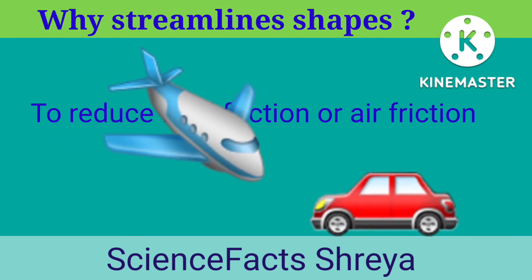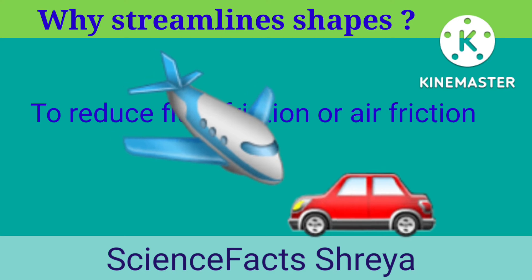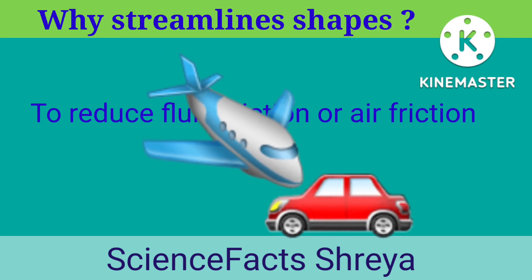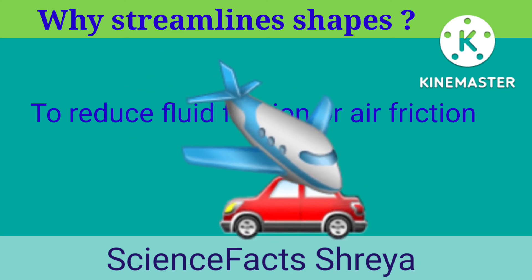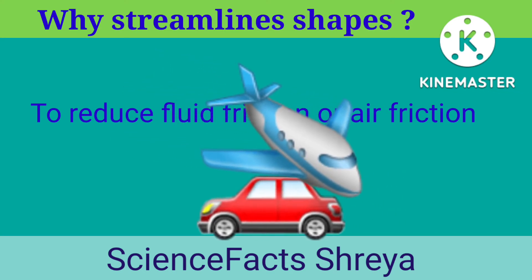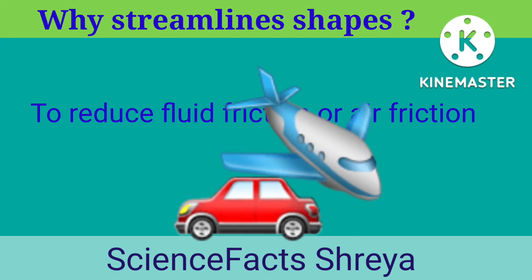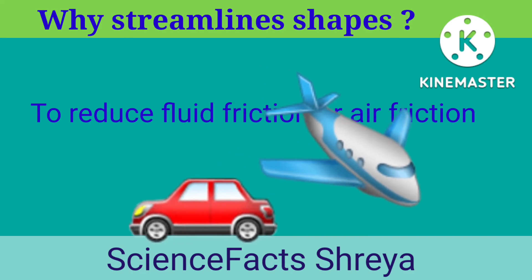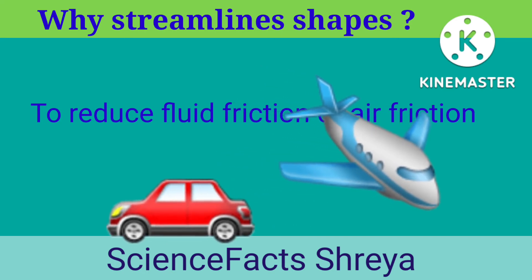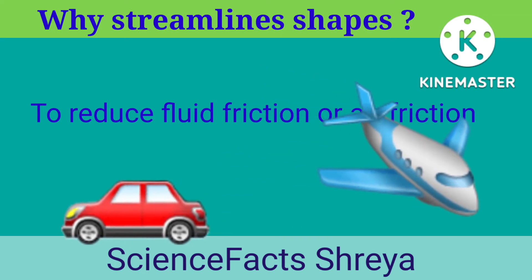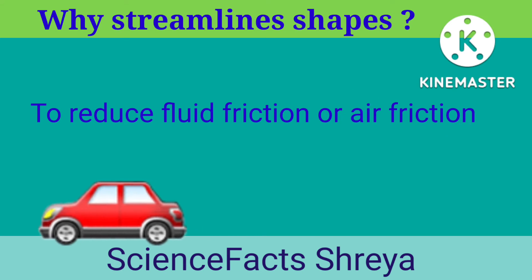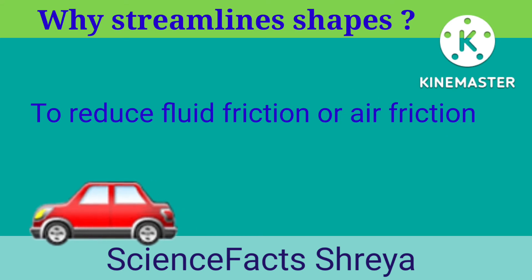To reduce friction — fluid friction or air friction. In the case of a boat, it is fluid friction, and in other cases like a car or aeroplane, it is air friction. To show reduced fluid friction or air friction, streamlined shapes are used.